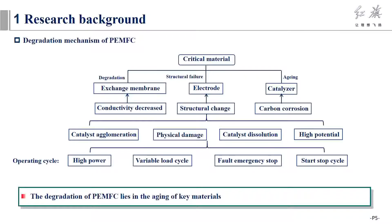For fuel cell vehicles, operating conditions have a great impact on the service life of PEM fuel cell. The degradation of proton exchange membrane and catalyzer is accelerated due to high operating power and current discharge. System emergency stop will cause physical damage to the proton membrane, and the change of operating conditions will cause uneven distribution and aggravate catalyst corrosion. Multiple start-ups and shutdowns will lead to the formation of a hydrogen-oxygen interface at the anode, resulting in the thinning of the cathode layer and degradation of PEM performance.